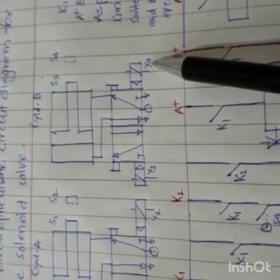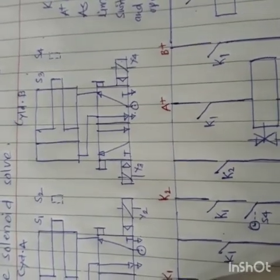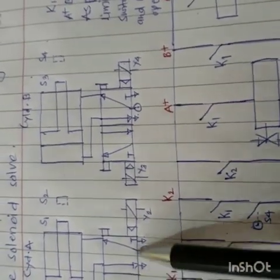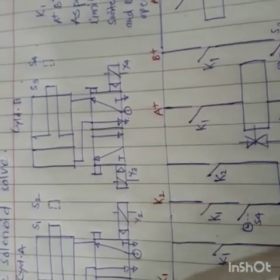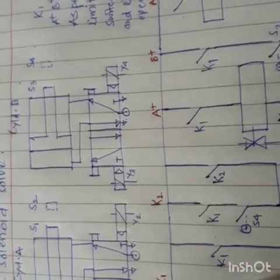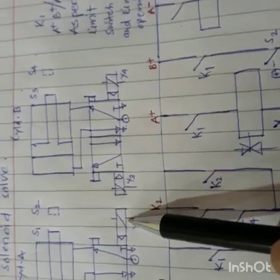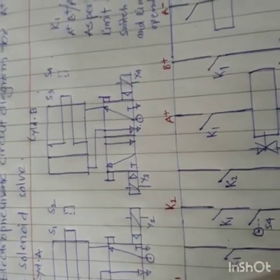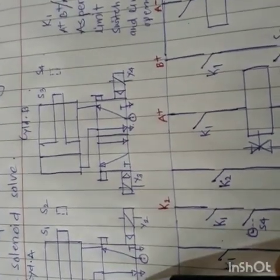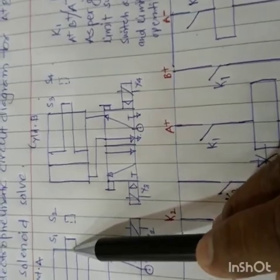We have to take care that when you actuate solenoid Y1, Y2 must be de-energized. So at a time these two solenoids cannot both be energized. When A plus is completed, that is Y1 is energized, the piston will move from the left hand side to the right hand side and touches S2.